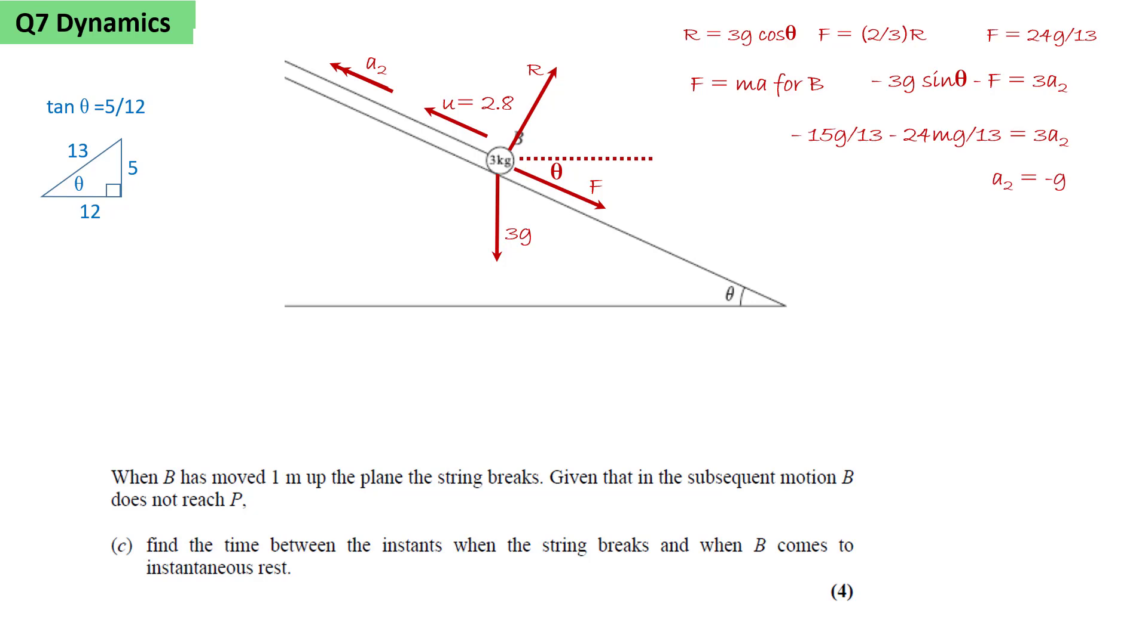Finally we use v equals u plus at to calculate the time required. The final velocity is zero, the velocity at the point when the string breaks is 2.8, the acceleration is minus g or minus 9.8 times t. This gives us t equals 0.286 seconds, which will be the time between the string breaking and B coming to instantaneous rest.